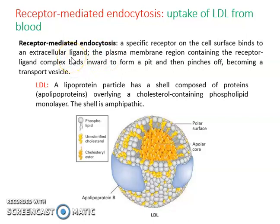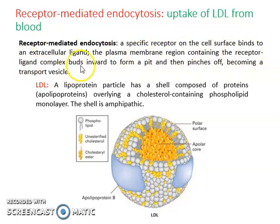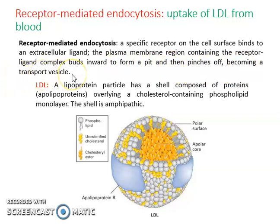The ligand here is the LDL particle. Then the plasma membrane region containing the receptor-ligand complex buds inward — the membrane invaginates to form a pit and then pinches off, becoming a transport vesicle.